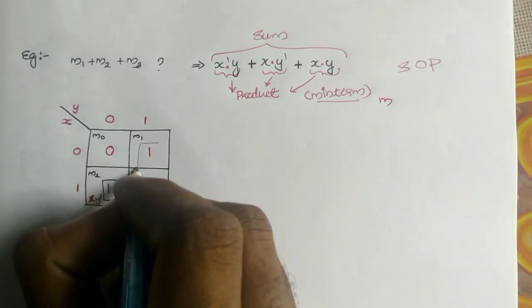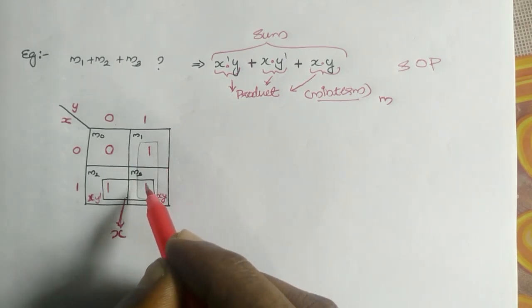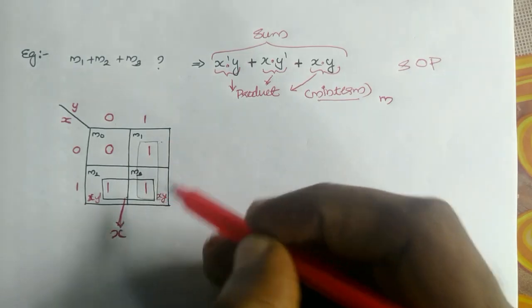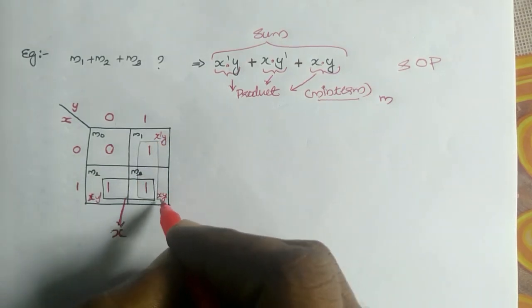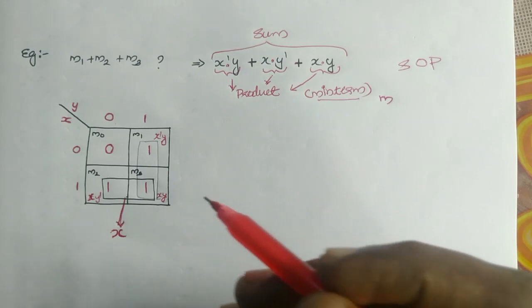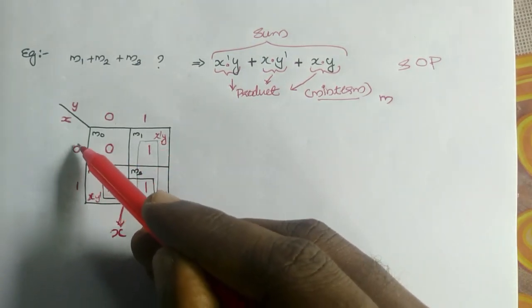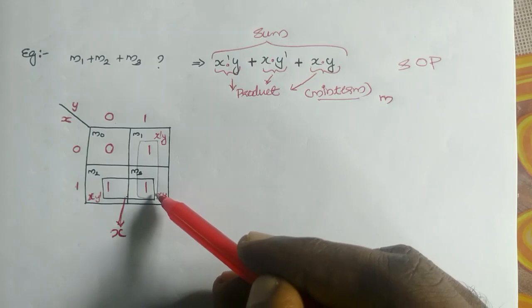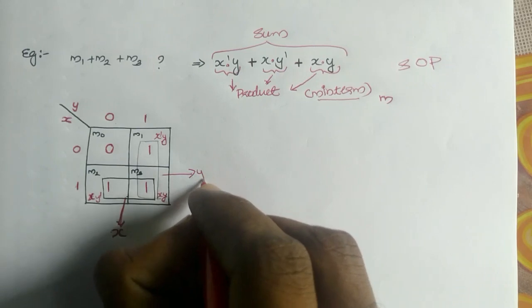Another case is M1 and M3. M1 represents X bar Y and this represents X, Y. So this represents X bar Y, and this element represents X, Y. The variable that is having change is X. X changes from X bar to X.